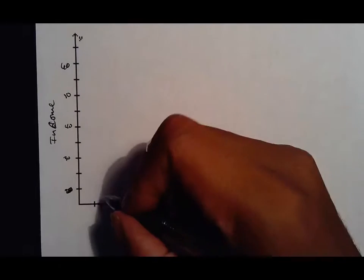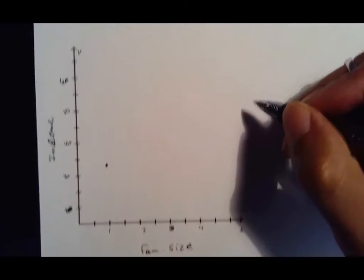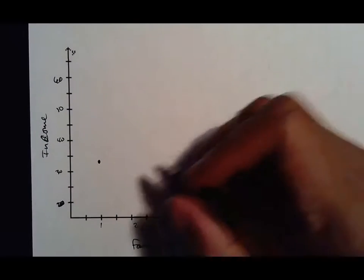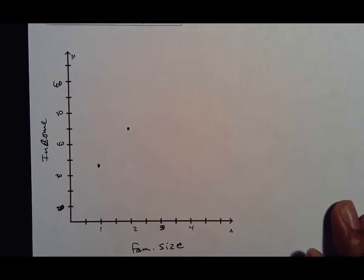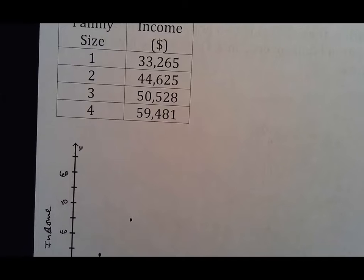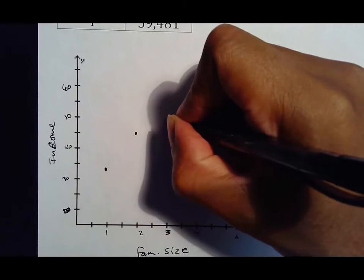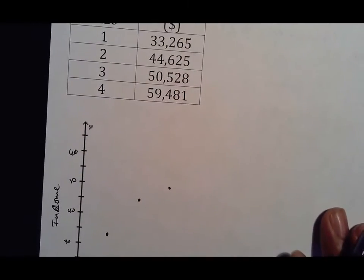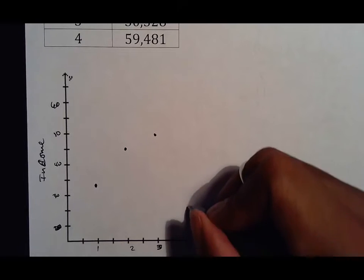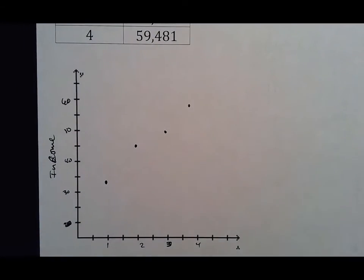One goes to about thirty-three thousand two sixty-five, so below thirty-five thousand, somewhere around here. Two thousand goes to forty-four thousand, that's pretty close to forty-five thousand. In my class, you're not going to get marked for being slightly off. You just need to be at least in the area. Three thousand goes to fifty thousand five hundred. Typically, if you use gridded paper or lined paper, it'll help. And then four thousand goes to close to sixty thousand. If you look at the correlation, it's going in an upward direction. It would be called a positive correlation.